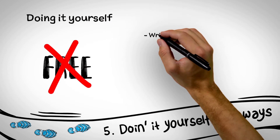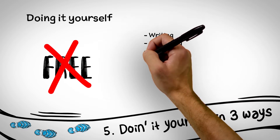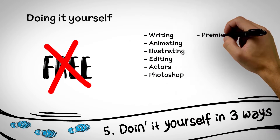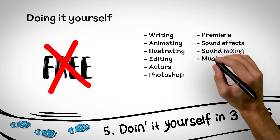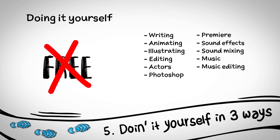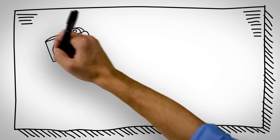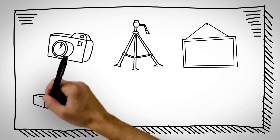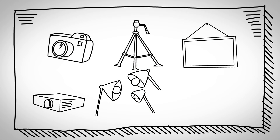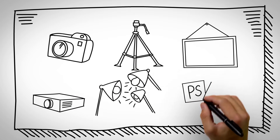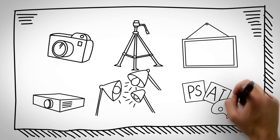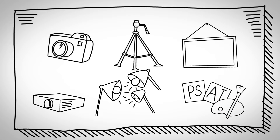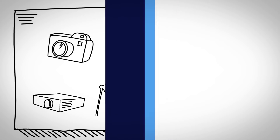Step 5: doing it yourself — in three ways. The first thing to note is that doing it yourself is not free. Writing, animating, illustrating, doing voiceover, and music all take a lot of time, and a poor video is often a waste of time, energy, and money. But if you have no other option, here's what you can do: get a high-resolution video camera, a tripod, a whiteboard, a projector, and bright global lighting from all sides.